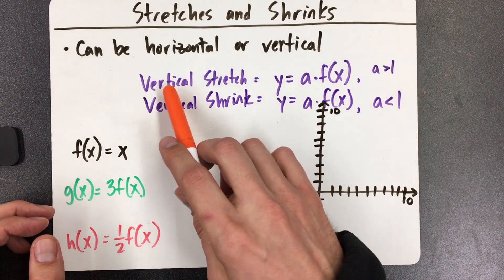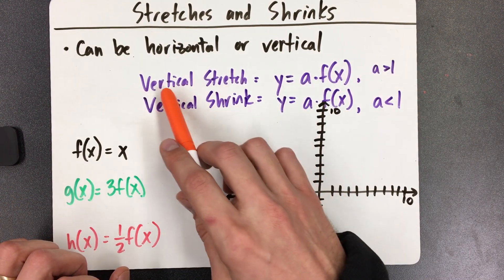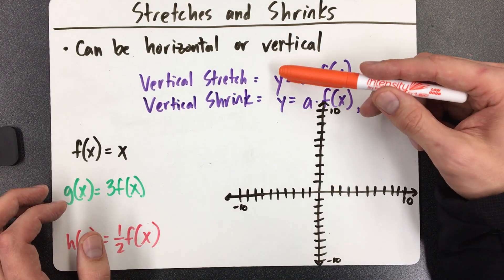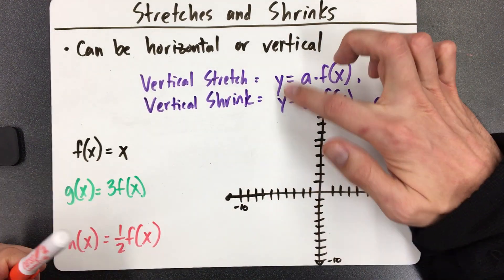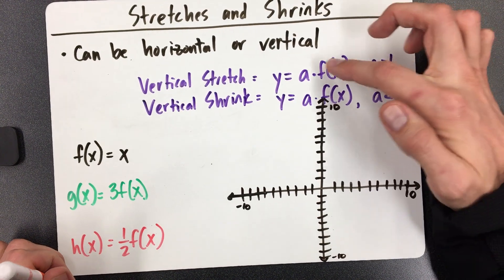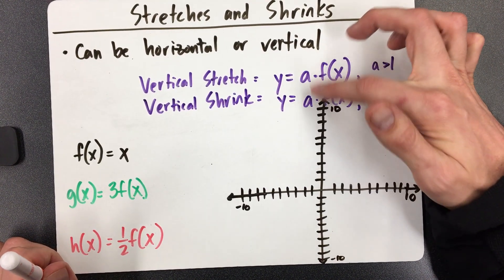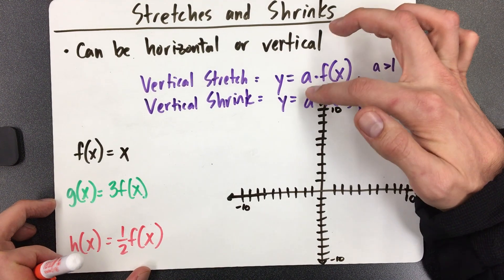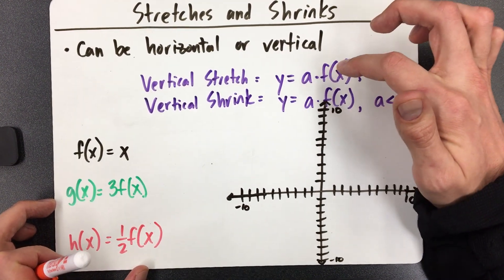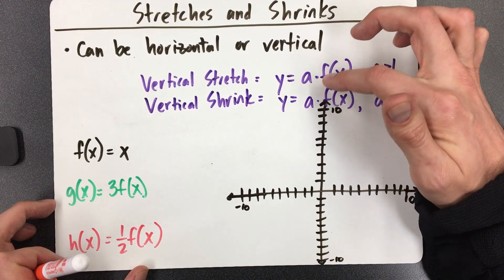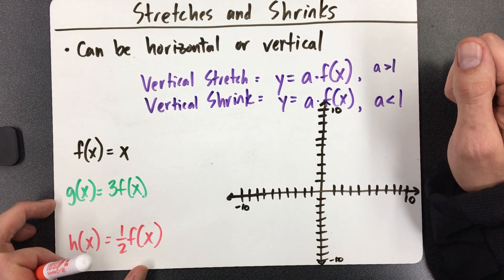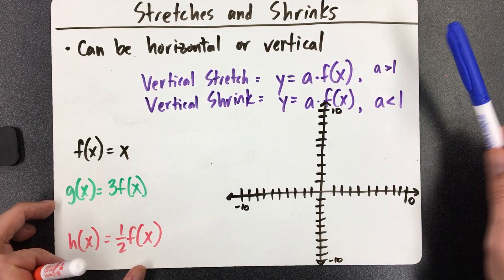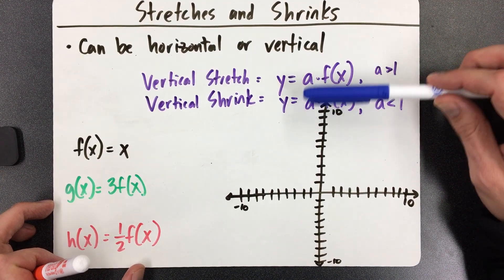So really quickly, here's what the format will look like. They'll give you a vertical stretch or a vertical shrink, and it will look kind of the same. They'll give you an equation or a function with some number in the spot of the letter A. The letter A is always going to be a number that is outside the parentheses, before the letter f, multiplying everything.